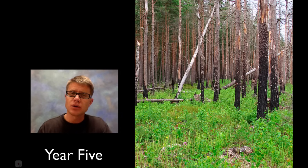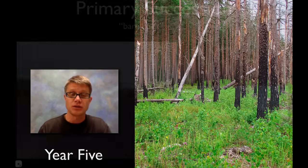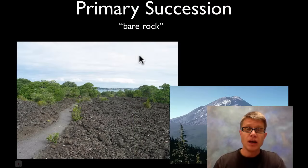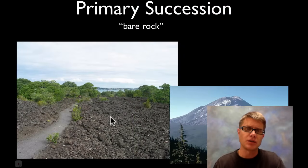Succession tends to occur at a predictable rate and using a number of predictable species. We can break succession into two different parts. The first one is called primary succession.